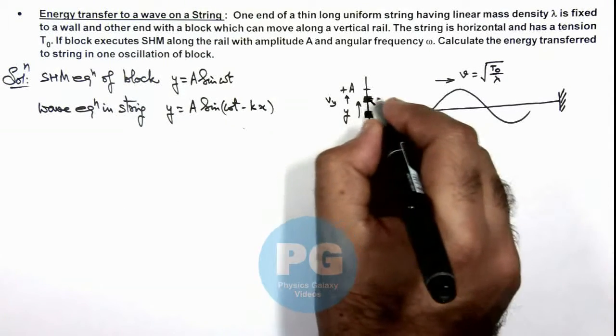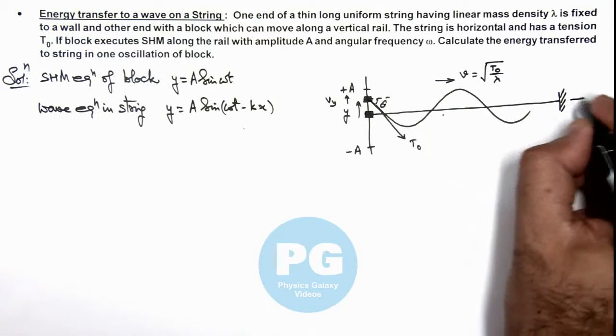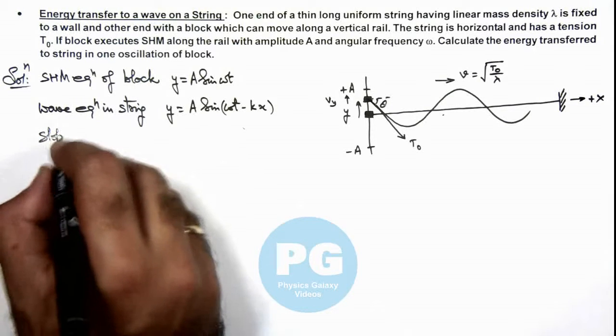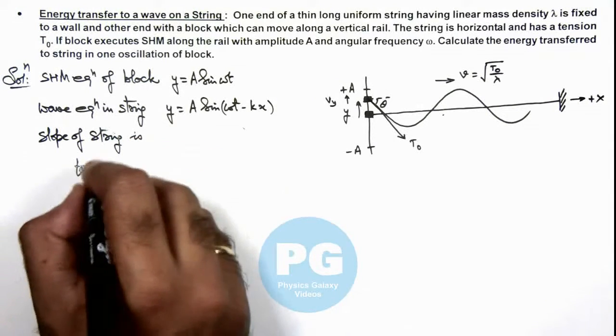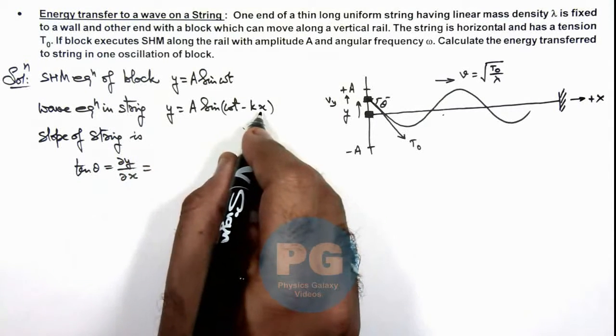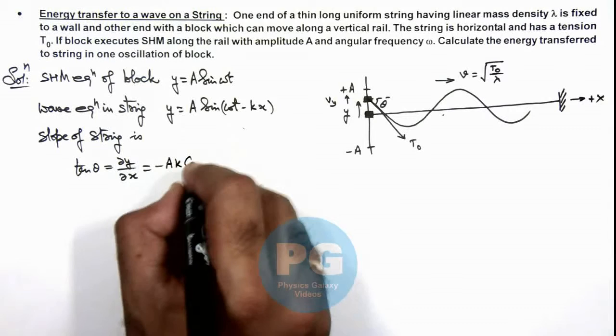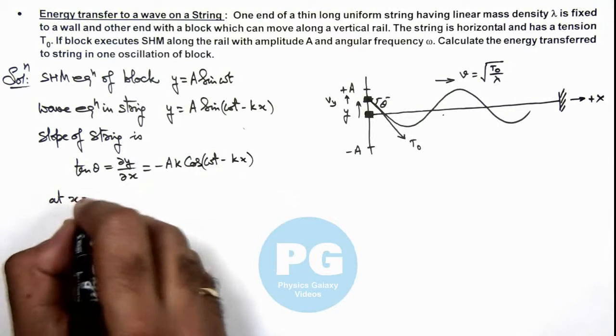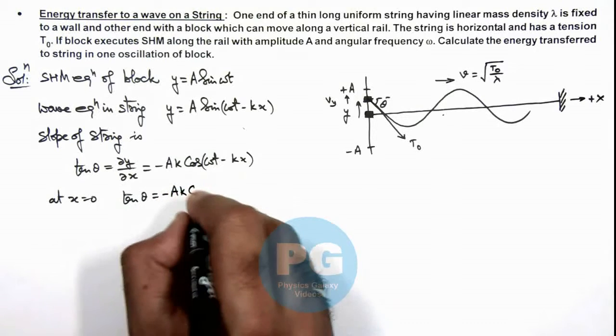From here we first calculate the slope of this string at point x = 0. If we consider this direction as plus x axis, then we can write the slope of the string as tan θ. In magnitude this is ∂y/∂x. On further differentiating this expression with respect to x only, this is -Ak cos(ωt - kx). At x = 0 the value of tan θ we are getting is -Ak cos(ωt).